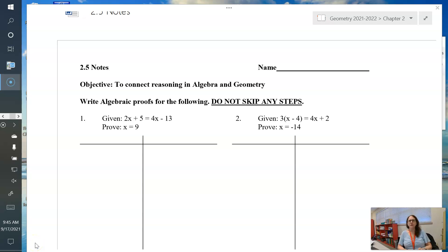Hello everyone, this is Mrs. Snook with Section 2.5, and in this section we are going to start writing proofs. Our objective is to connect reasoning in algebra and geometry. A proof is a series of steps that you take to solve a problem, and you list down the reasons that you're taking that step. In other words, you could think of it as what rule says I can do what I'm doing?